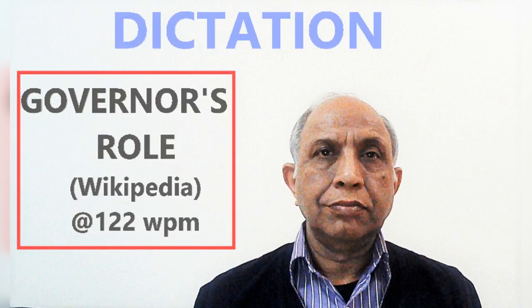The governor appoints the chief minister of a state. He or she also appoints the advocate general and the chairman and members of the state public service commission. Apart from this, the state election commissioner is also appointed by the governor, though removed by the president. The president consults the governor in the appointment of judges of the high courts, and the governor appoints the judges of the district courts.